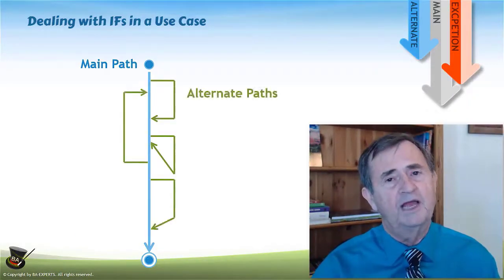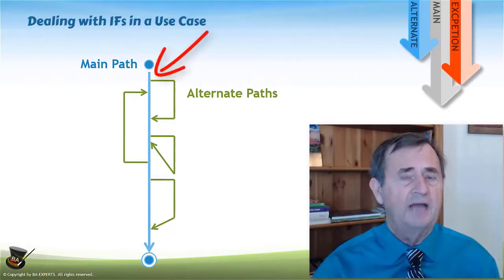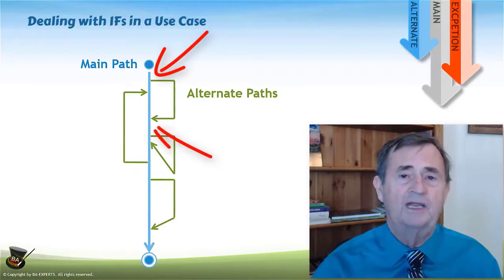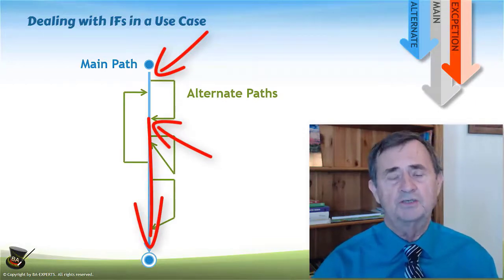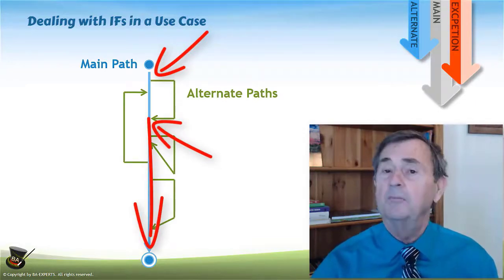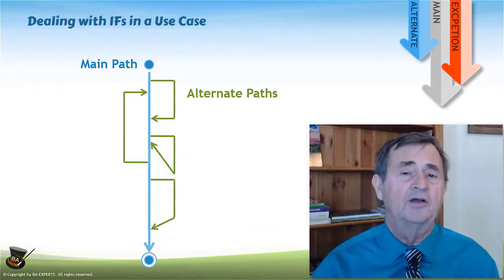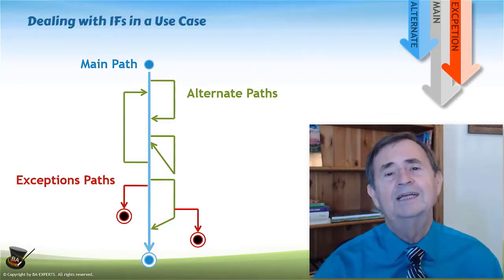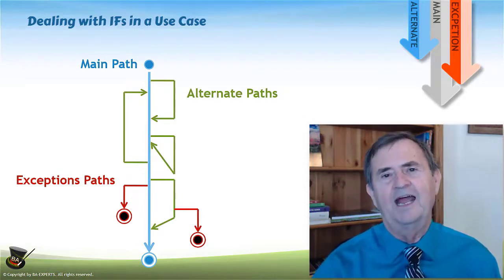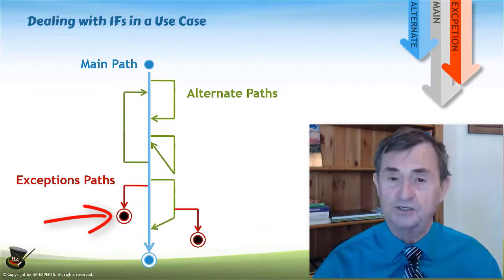An alternate path is a path that deviates from the main path, but returns to the main path to ultimately deliver the value that the use case promises — the post condition. The other type of path are exceptions, and an exception path ultimately does not go back to the main path. It actually ends the use case with the post condition unsatisfied.